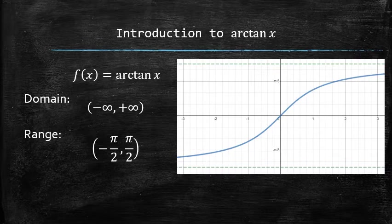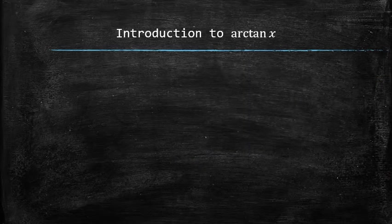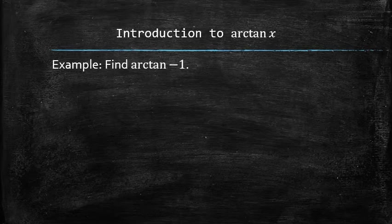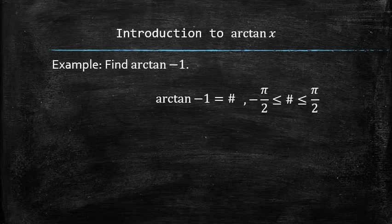We should be able to find the output of this function for any input in the domain using the graph or a calculator. However, the outputs for some nice inputs we should be able to figure out analytically. For example, let's find the arctangent of negative 1. We're looking for some value that is between -π/2 and π/2 such that the tangent of this value is negative 1.